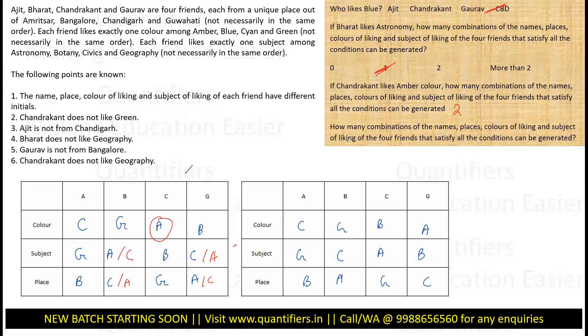How many total combinations of name, place, color, and subject of the four friends satisfy everything? One case here plus two cases there — the total is three cases. This completes our set.